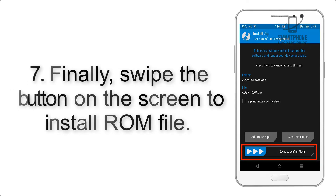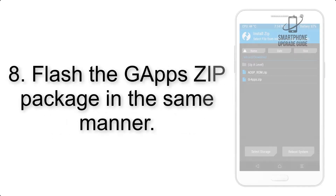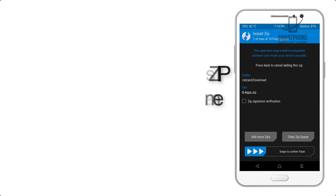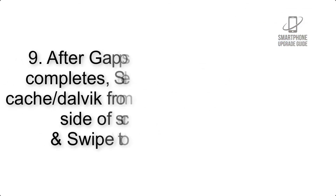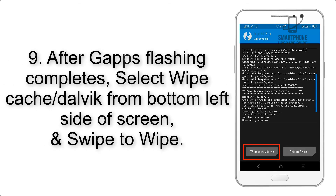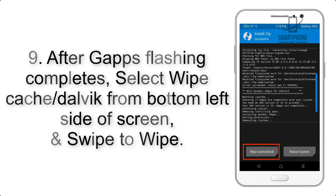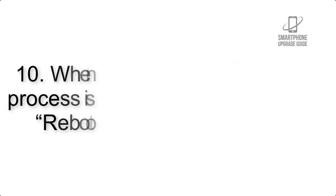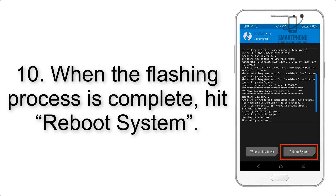Step 7: Swipe the button on the screen to install the ROM file. Step 8: Flash the gapps zip package in the same manner. Step 9: After gapps flashing completes, select Wipe Cache and Dalvik from the bottom left side of the screen and swipe to wipe.